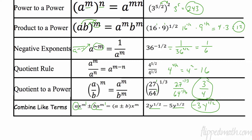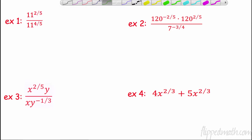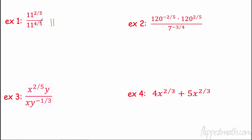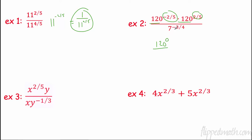So this is a division rule — same base, I subtract the exponents. Two fifths minus four fifths — put it in your calculator — that is negative two fifths. I can't have a negative exponent on top, so it's going to go to the bottom. Over here I have the same base so I add the exponents when I multiply. So now I have 120 to the negative two fifths plus two, which is zero, and then negative x to the one. Anything to the zero power is one, so one times seven to the three fourths is seven to the three fourths.